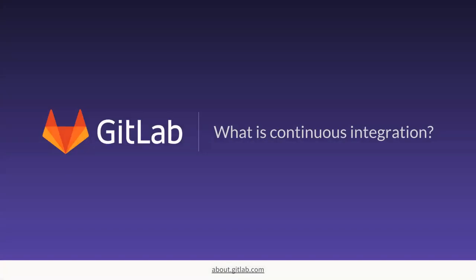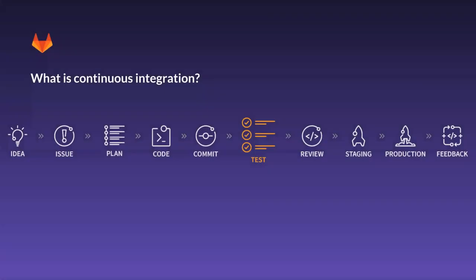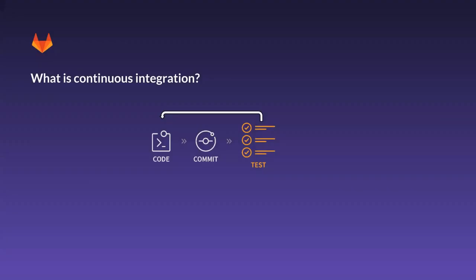So we're going to begin defining some terms. What is continuous integration? Here is the entire software delivery lifecycle in one graphic. On the left side we have the ideation phase, where we begin to size features and user stories and start to attach various milestones or issues to those. All the way to the right we're doing monitoring, deployments, and gathering feedback. CI really fits in the middle — it encompasses automated testing but also the code and commit workflow.